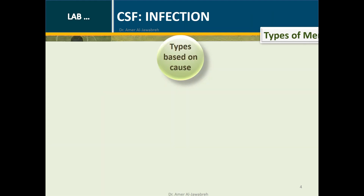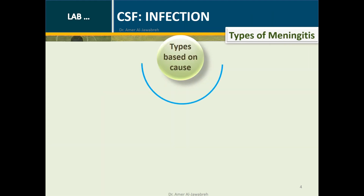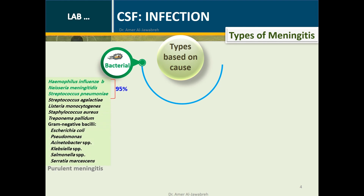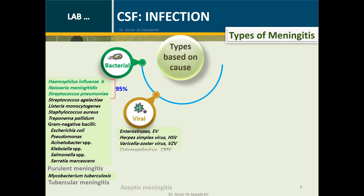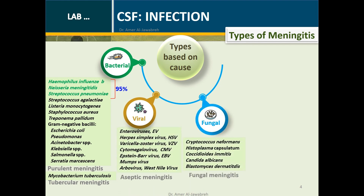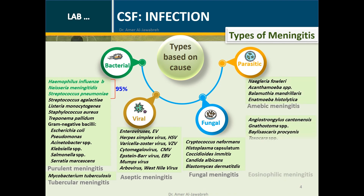CSF Infection — Types of Meningitis: Bacterial, causing purulent meningitis or tubercular meningitis; Viral, causing aseptic meningitis; Fungal meningitis; and Parasitic, causing amoebic meningitis or eosinophilic meningitis.